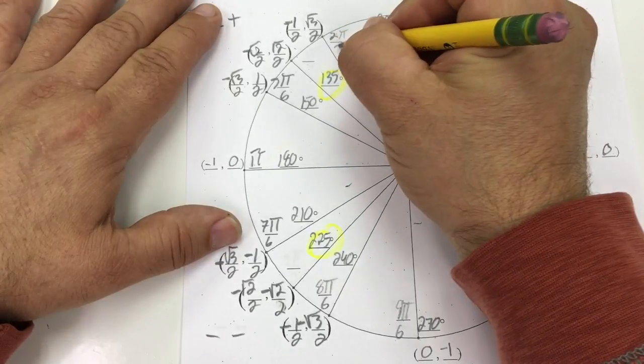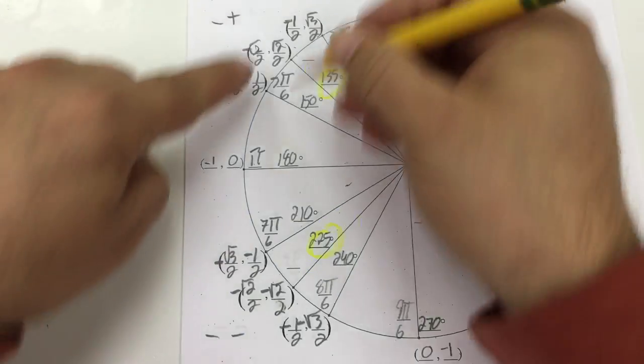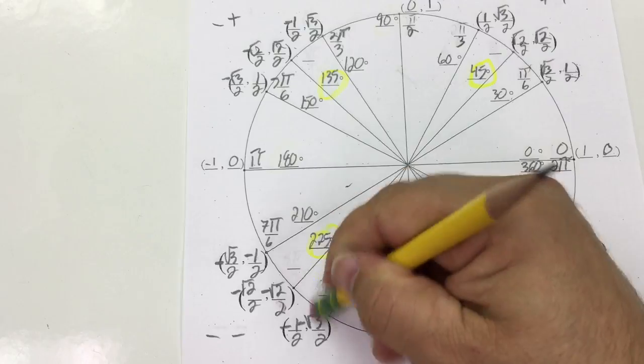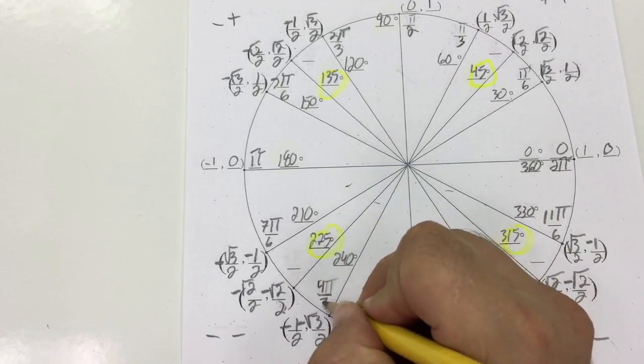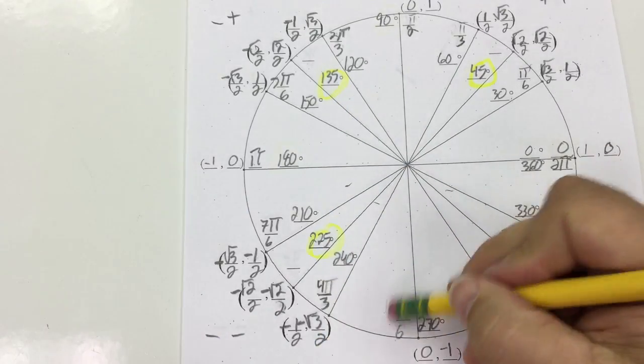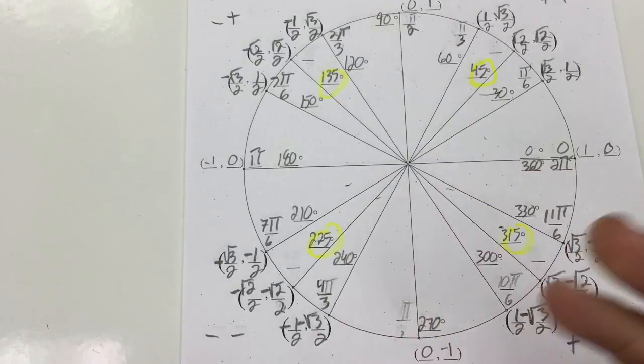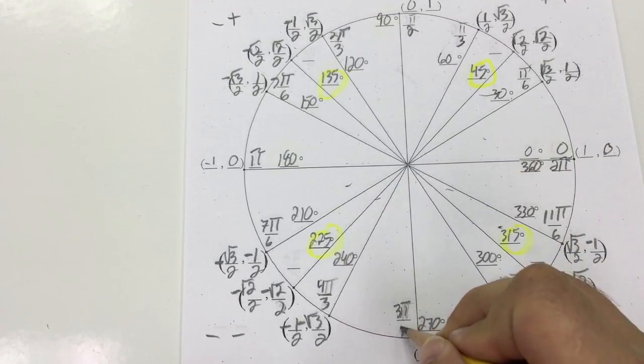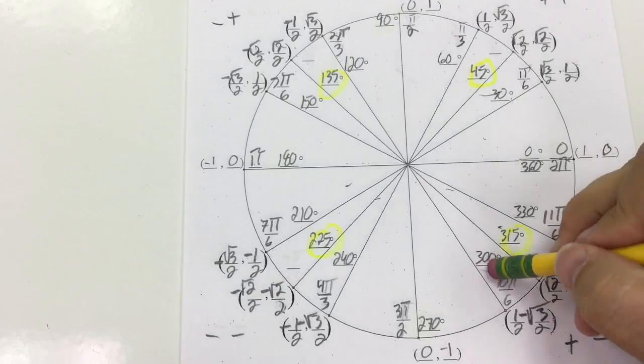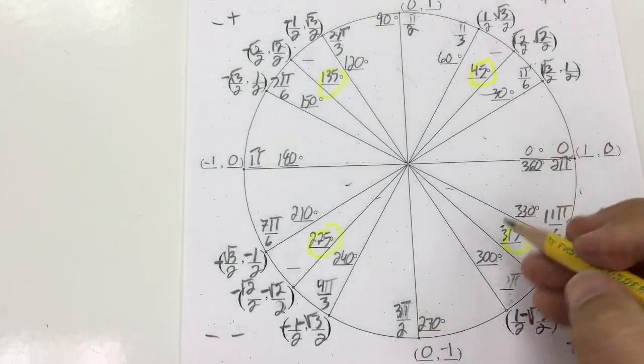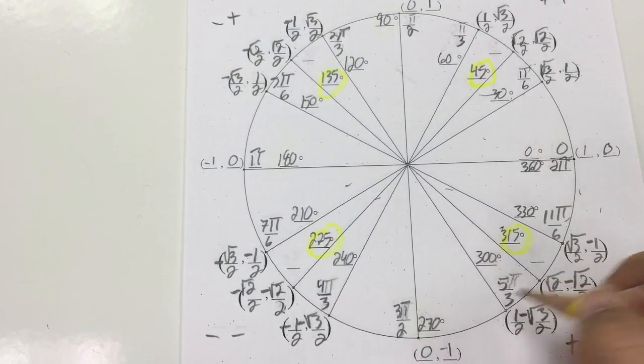8π/6—cut those in half, that's 4π/3. 9π/6—divide 9 by 3, that gives me 3π/2, because 6 divided by 3 is 2. Cut these in half, that gives me 5π/3.